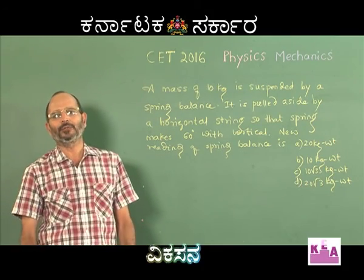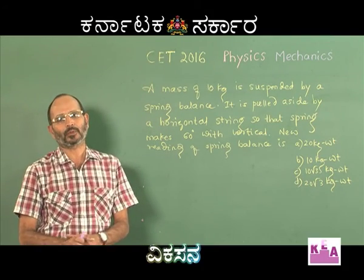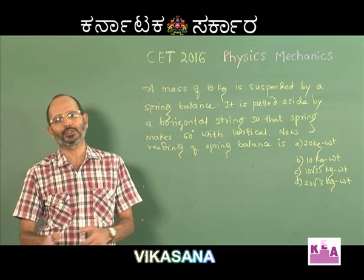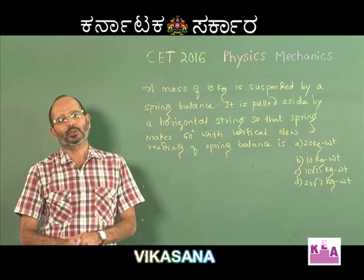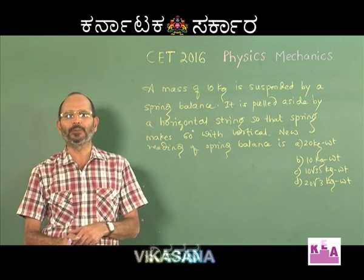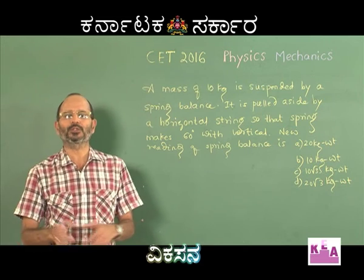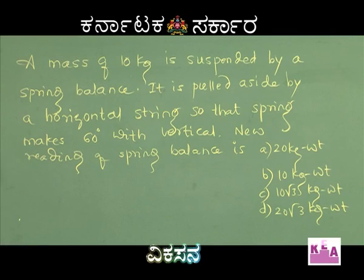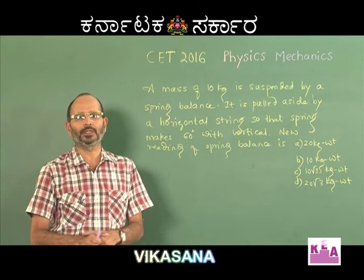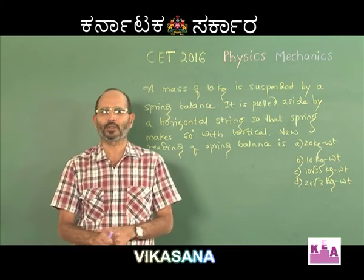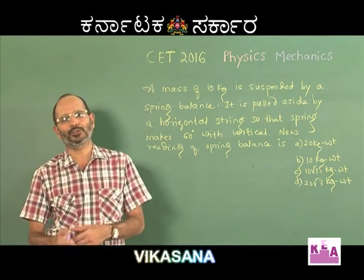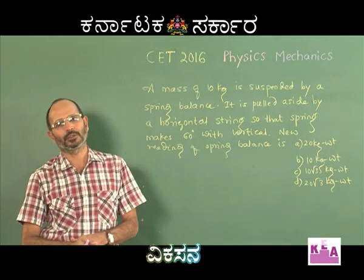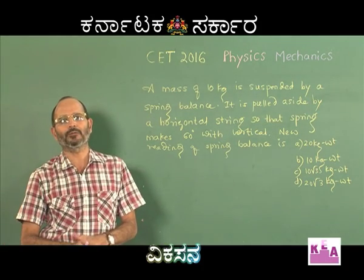Here we have one problem on equilibrium. A couple of problems are always asked on equilibrium in the Newton's laws of motion chapter. Whenever the forces acting on a body result in zero net force — that does not mean there should be no forces acting at all. There may be 100 and odd forces acting on the body, but their resultant should be 0. Then the body will be in equilibrium.